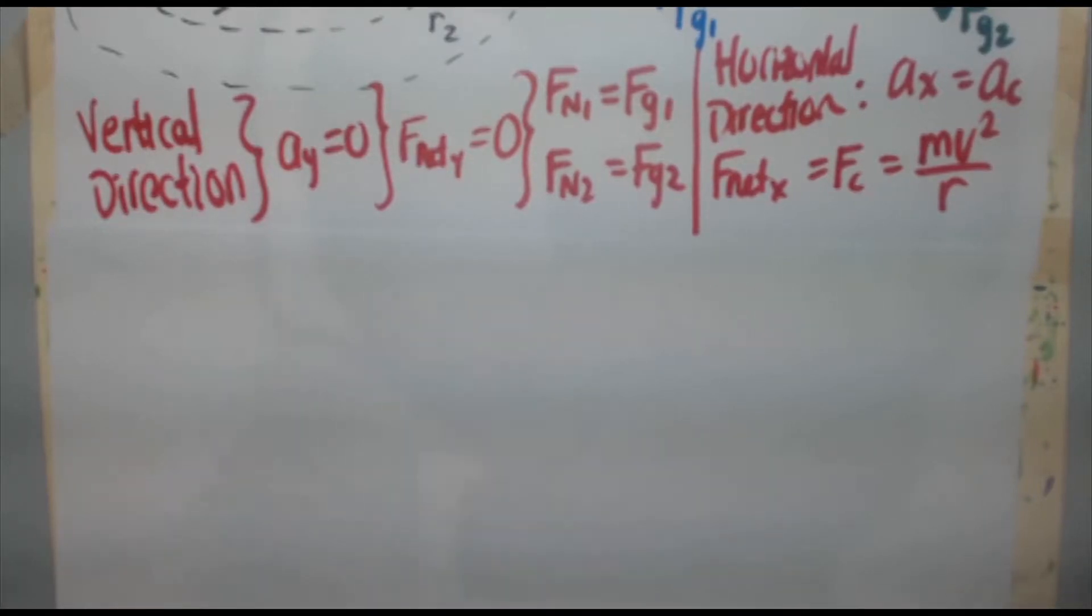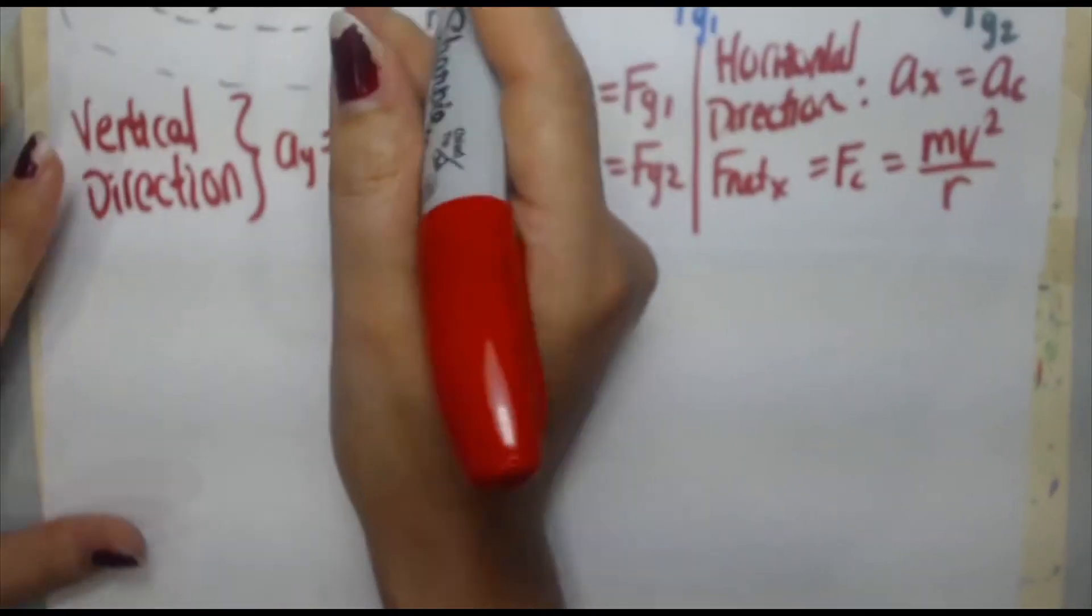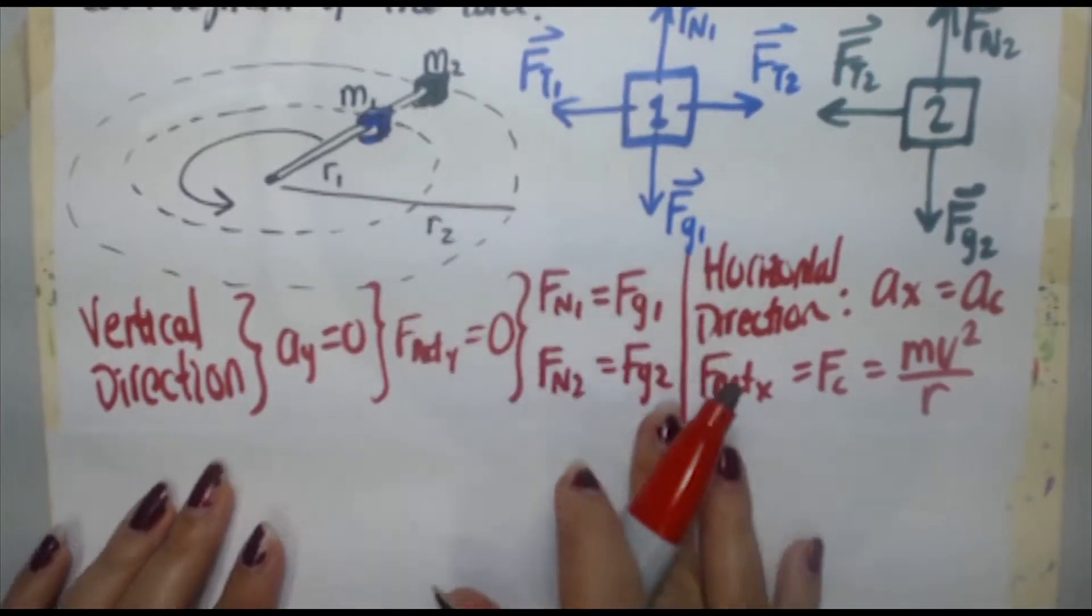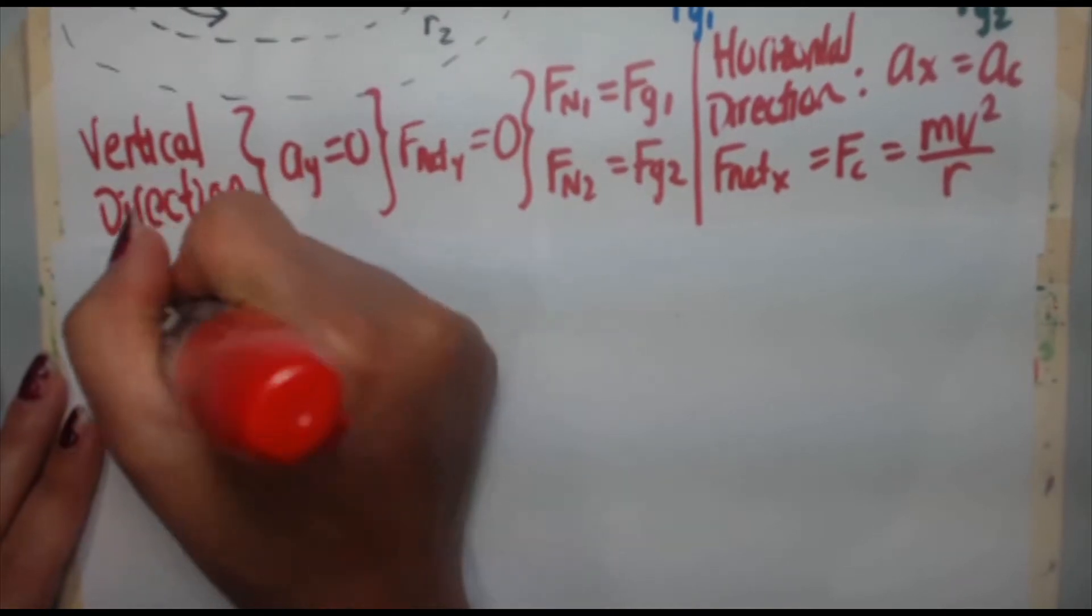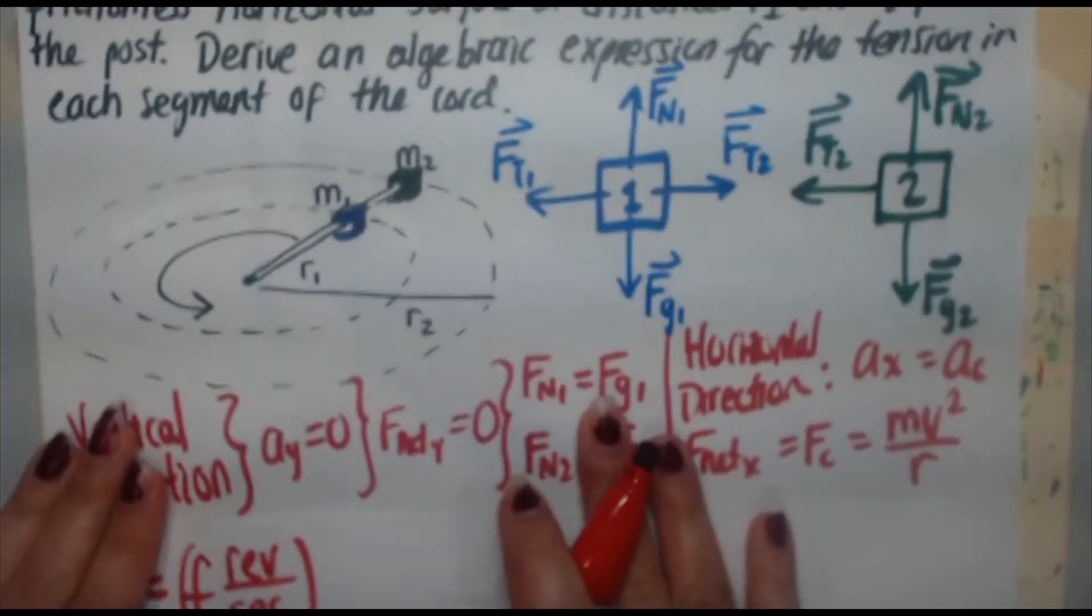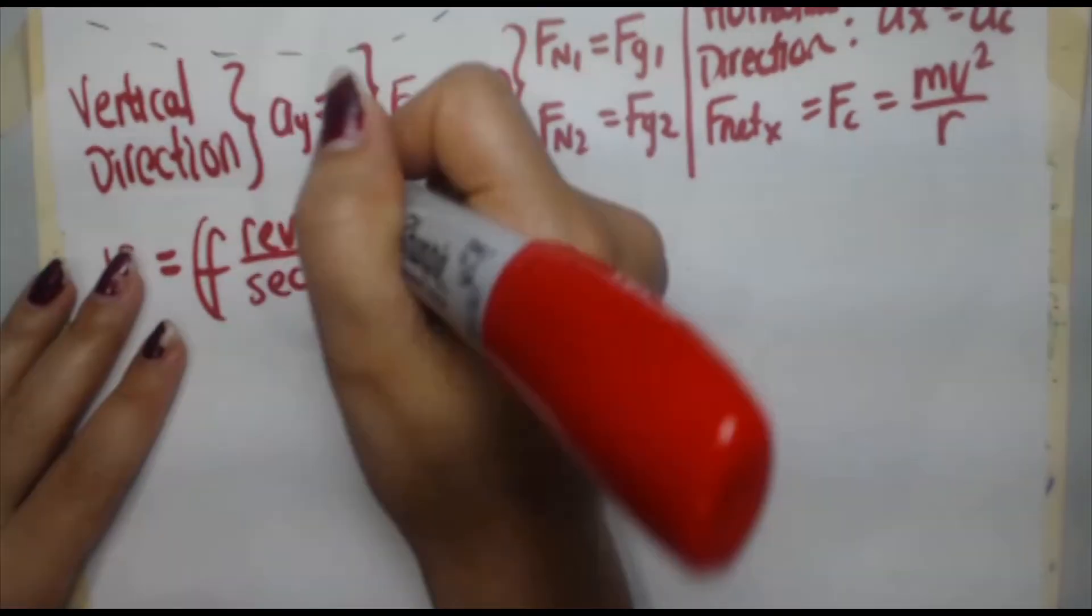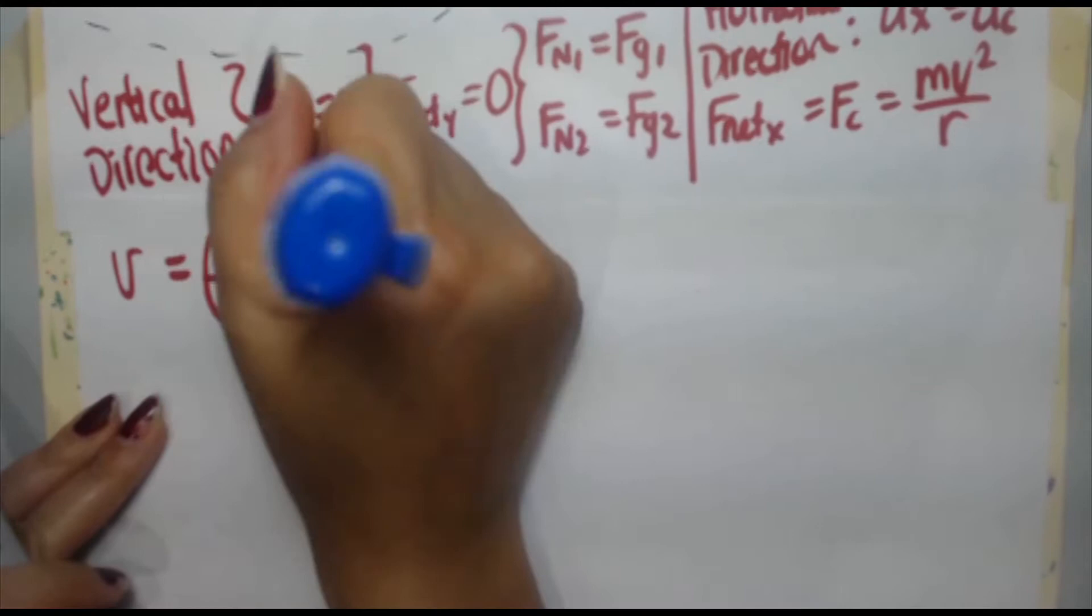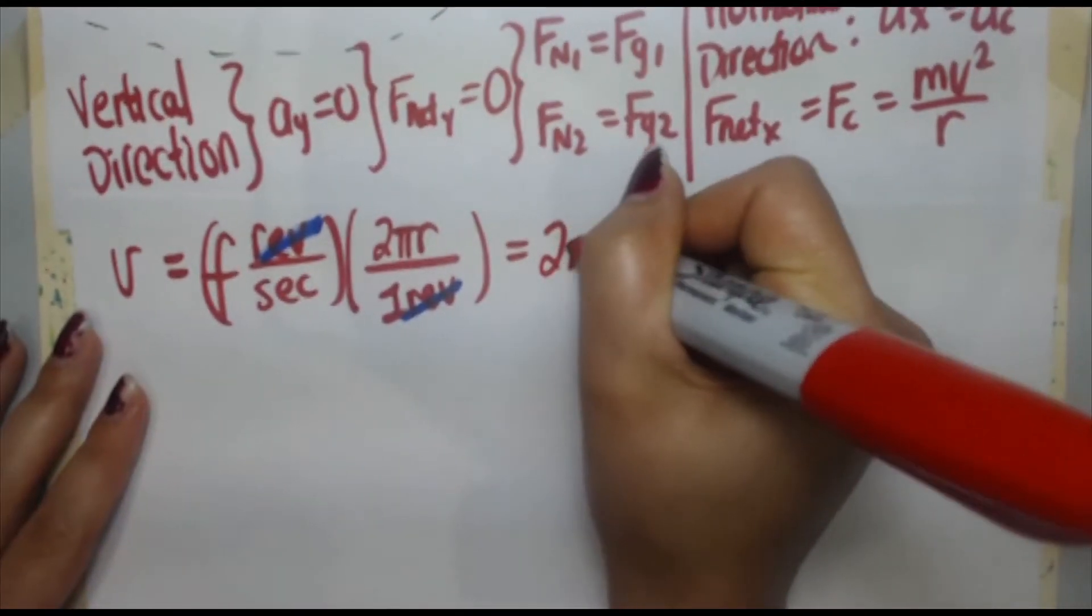So in this question, we're told that the blocks are rotating about the center at the frequency f. Now, later on, as you take physics more, you'll learn that if you have a speed going in a circle, we call that angular velocity. But because you may or may not have been introduced to that concept yet, I'm just going to call it speed for now. So we'll just call it v, even though it is a rotating speed. If I do that, I get v equals 2 pi r f.